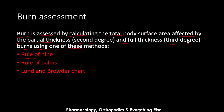The methods include the rule of nine, the rule of palms, and the Lund and Browder chart. We calculate the total body surface area affected by second and third degree burns using the rule of nine or the rule of palms initially when pre-hospital or in the emergency department, and once we reach the burn unit we use the Lund and Browder chart, which we will explain in the next slides.